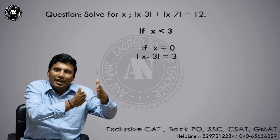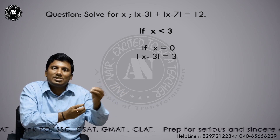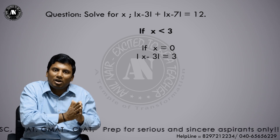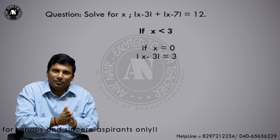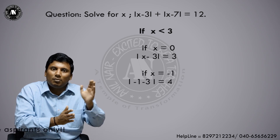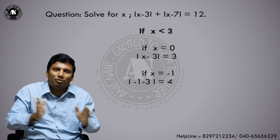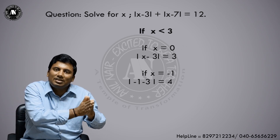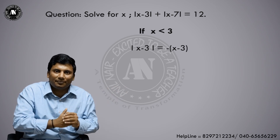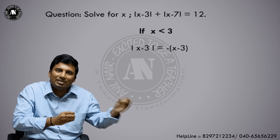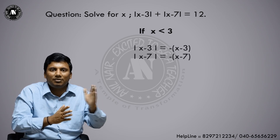Case 1: x is less than 3. If x is less than 3 — suppose I put x = 0, mod(0 - 3) is 3; if x = -1, mod(-1 - 3) = mod(-4) = 4. So when x is less than 3, mod(x - 3) becomes -(x - 3), and mod(x - 7) also becomes -(x - 7).